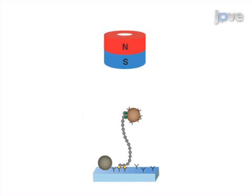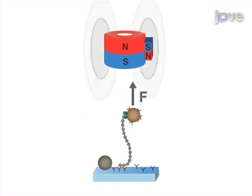In a second related assay, called Magnetic Torque Tweezers, or MTT, a side magnet is added to the main cylindrical magnet to constrain the bead's angular motion.